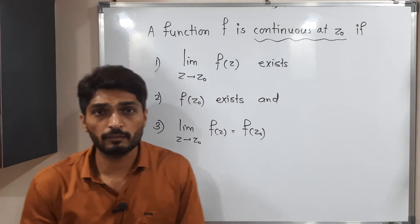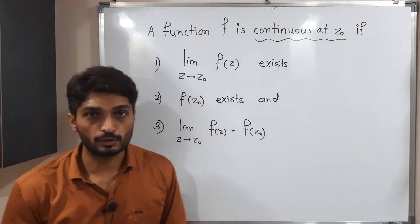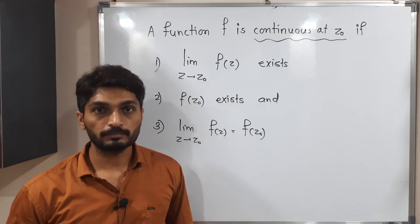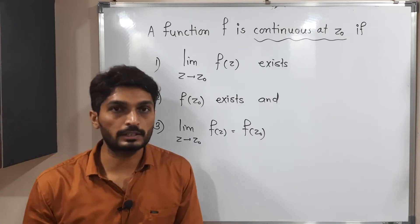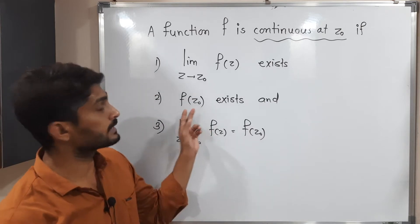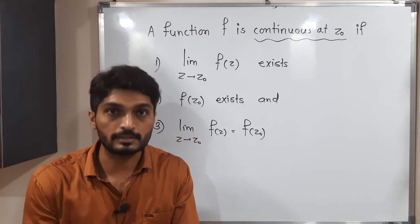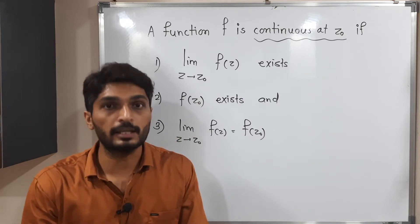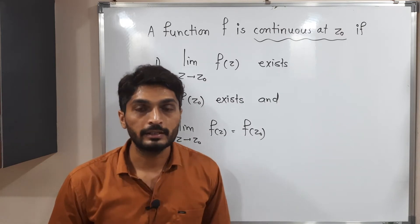So same kind of definition we have here in complex-valued function also. The first thing, that limit should exist. Getting that limit already we have seen in our previous videos. That limit should exist. That f of z naught, its value should exist. It should have some finite value. And both of them should be same. Then we say the function is continuous at z naught.